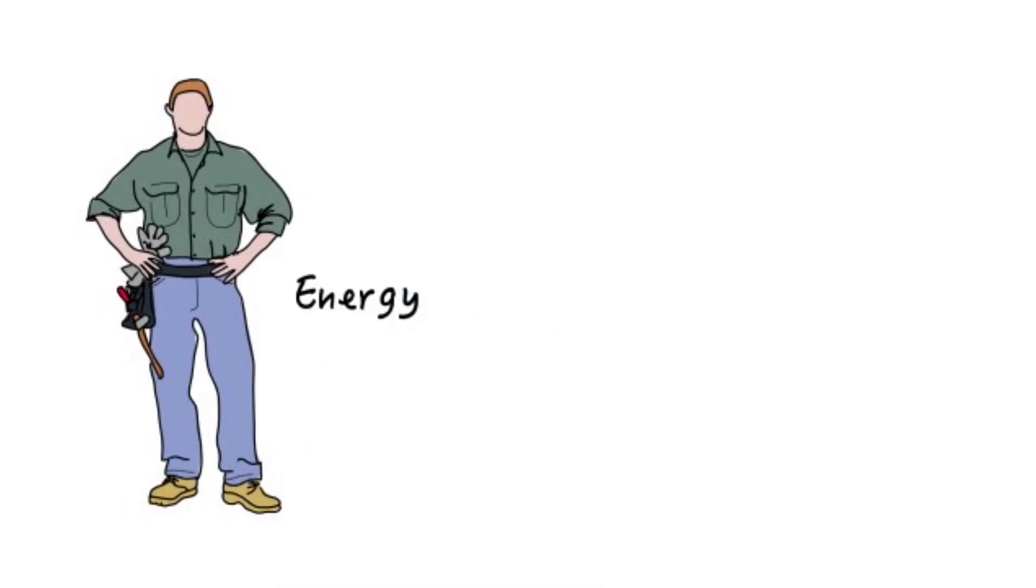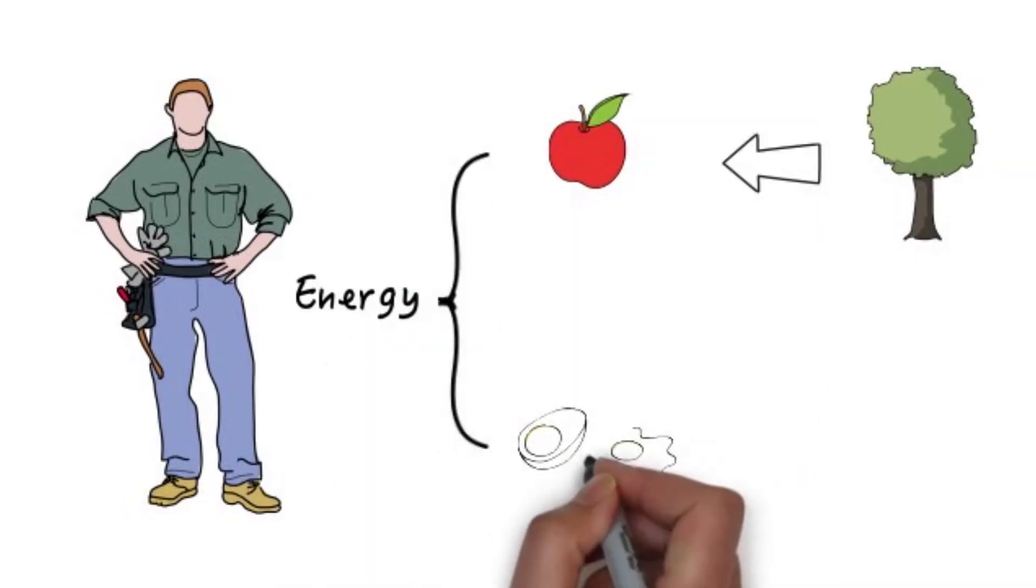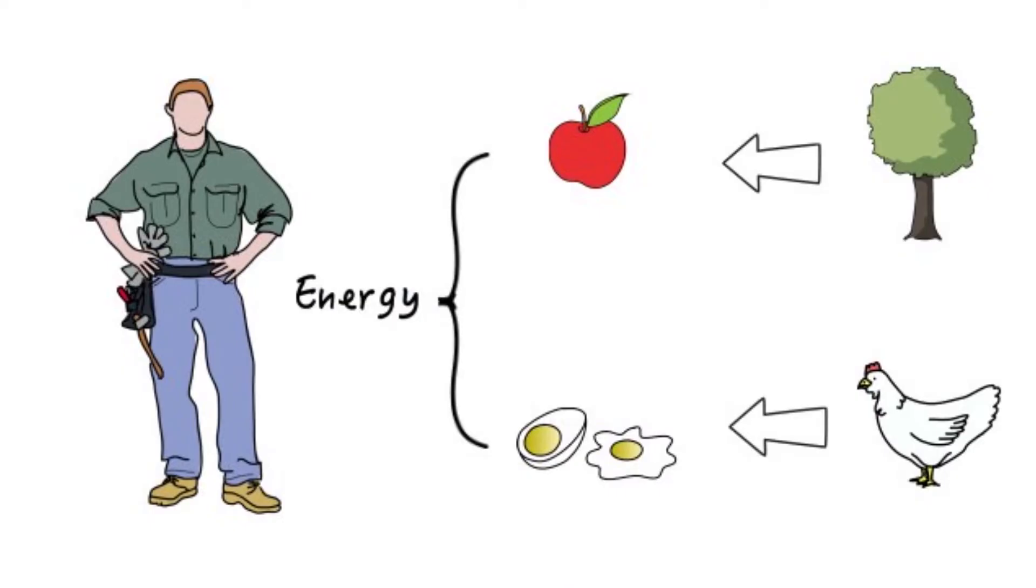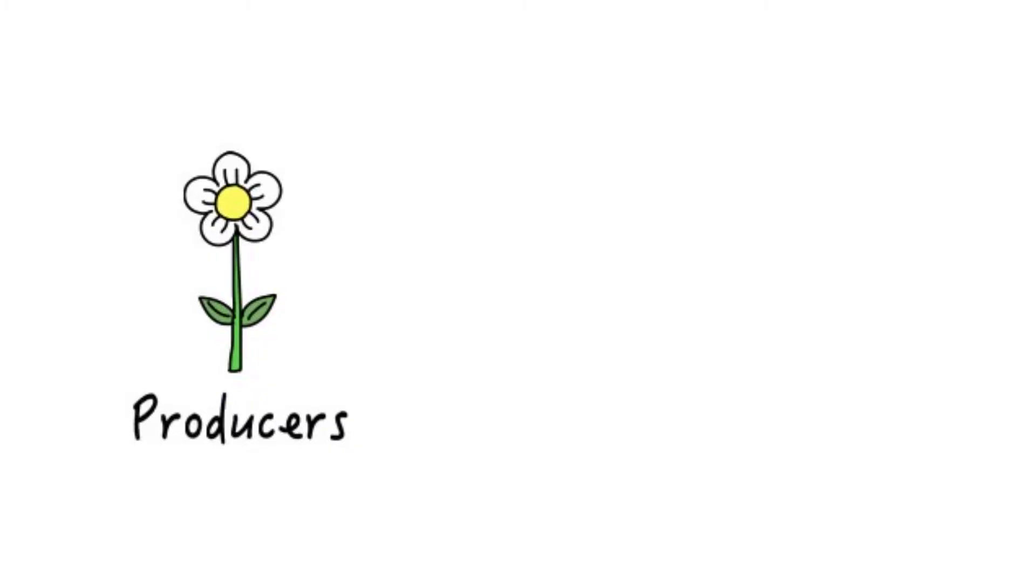People mostly get their energy by eating food. Our food comes from either plants or animals. Plants or any other living being that can make their own food are called producers.